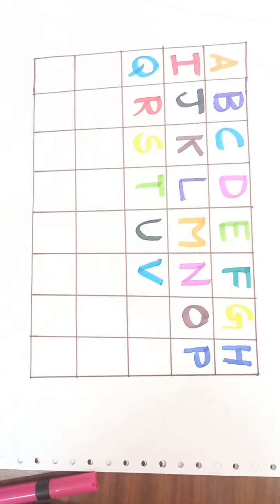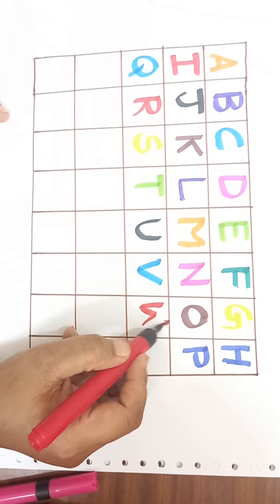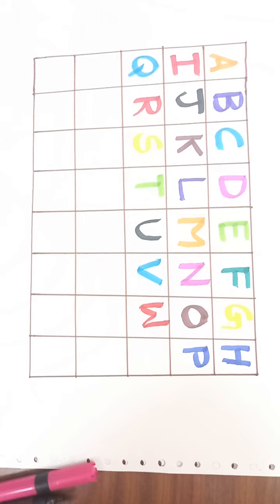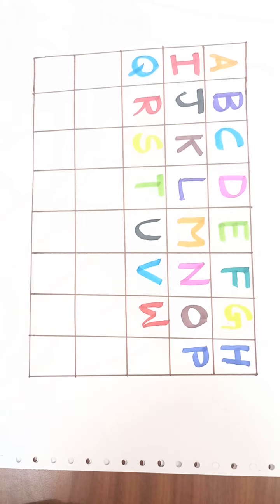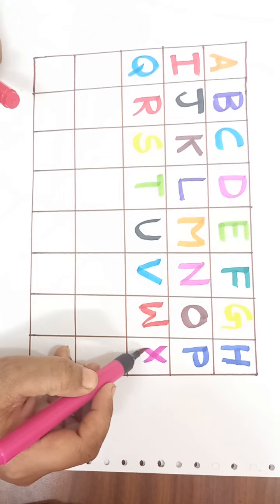Red color. W. W for watch. W-A-T-C-H, watch. Pink color. X. X for xylophone. X-Y-L-O-P-H-O-N-E. Xylophone.